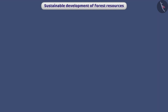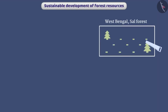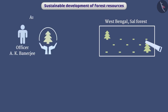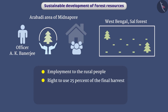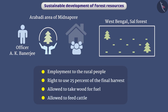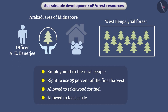Sustainable development of forest resources can be achieved. For example, in West Bengal, a sal forest was badly damaged due to excessive exploitation. Officer A.K. Banerji started a strategy in the Arabari area of Midnapore, involving local people in the work of forest conservation. This provided employment to rural people, who also got the right to use 25 percent of the final harvest and were allowed to take wood for fuel and feed cattle. With their active participation, the Arabari forest, once considered useless, has been estimated to be worth 12.5 crores.